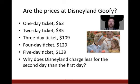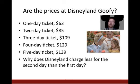Are the prices at Disneyland goofy? A one-day ticket costs $63, two days only $85, three days $109, four days $129, five days $139. Why does Disneyland charge less for the second day than the first? It's diminishing marginal utility. You get a ton of satisfaction the first day riding all the rides you love. But to come back the next day — you've already done that, so you're not going to pay the same price. And certainly for five days, they have to give you a great deal to keep you coming back.